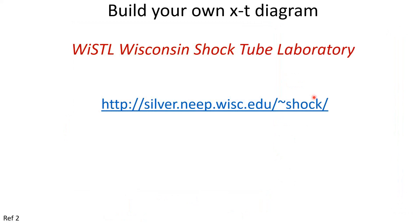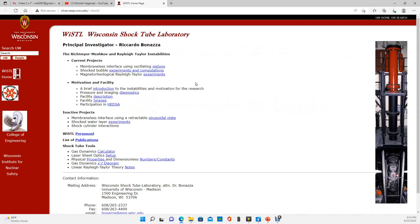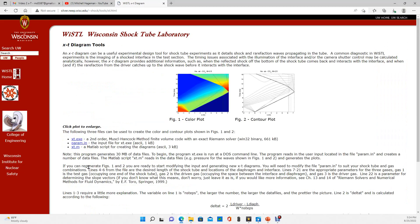So you can actually build your own XT diagram. The easiest way to do it is to go to the Wisconsin Shock Tube Laboratory or WISL website. And I'm actually going to do that now. And this is what it looks like. I've just followed, I'll paste this link in the comments section. To build our own XT diagram, we would go down to this link here. And then you can see that they do have a MATLAB script, but they also have a Windows 32 binary script. So if you've got Windows 32, I'm not sure if they've updated it for Windows 64, but you could run this to build your own XT diagram.